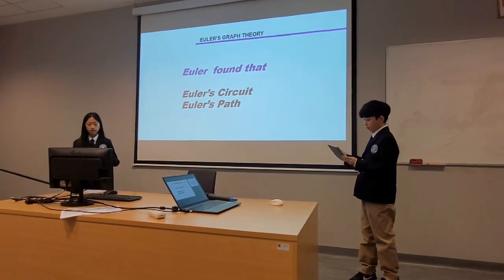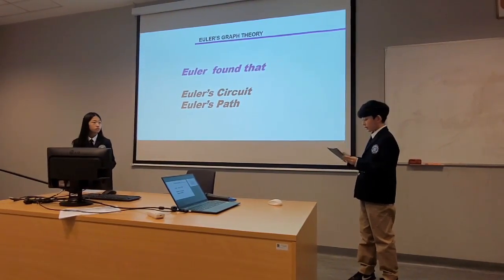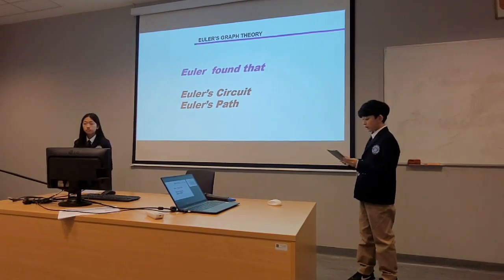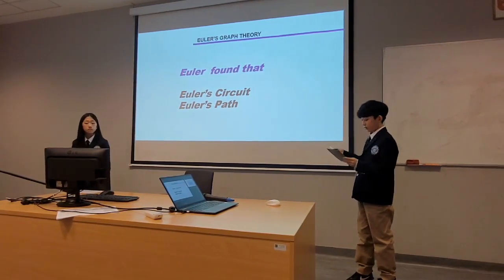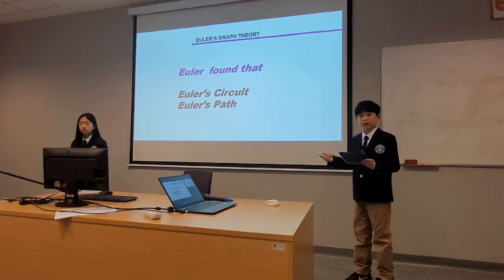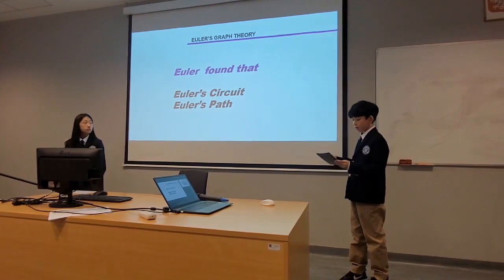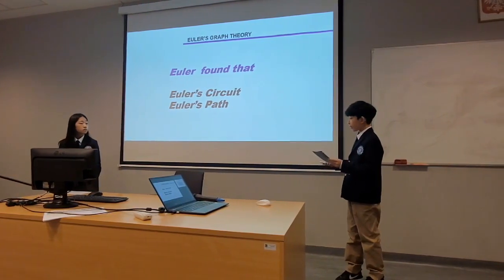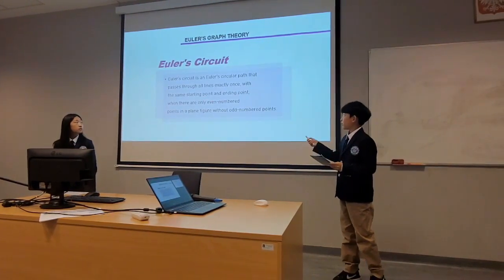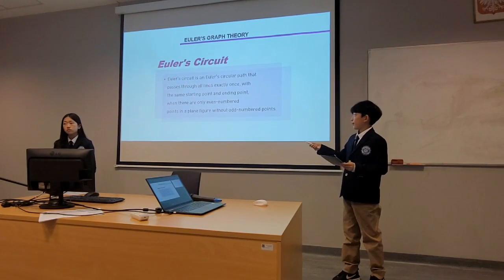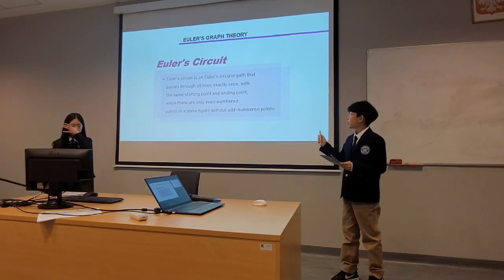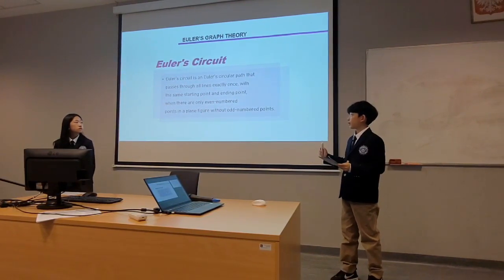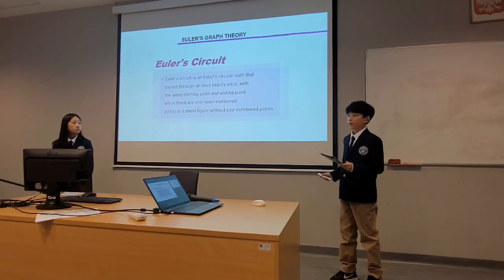Now let's look at Euler's theory. Euler's theory includes Euler's circuit and Euler's path. Euler's circuit and Euler's path are divided according to whether the starting point and ending point are the same or not. Euler's circuit is a circular path that passes through all lines exactly once, with the same starting and ending point, where there are only even-numbered vertices and no odd-numbered points.